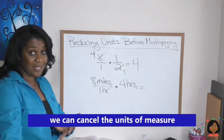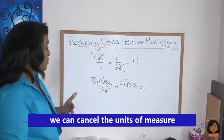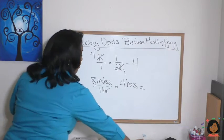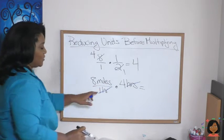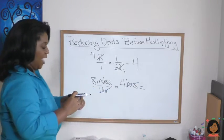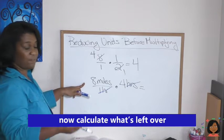We can also cancel units just the way we cancel numbers. I've got an hour here on the bottom, and I've got hours on the top. I've just canceled the hour with the hour. Now I am left with 8 miles times 4.